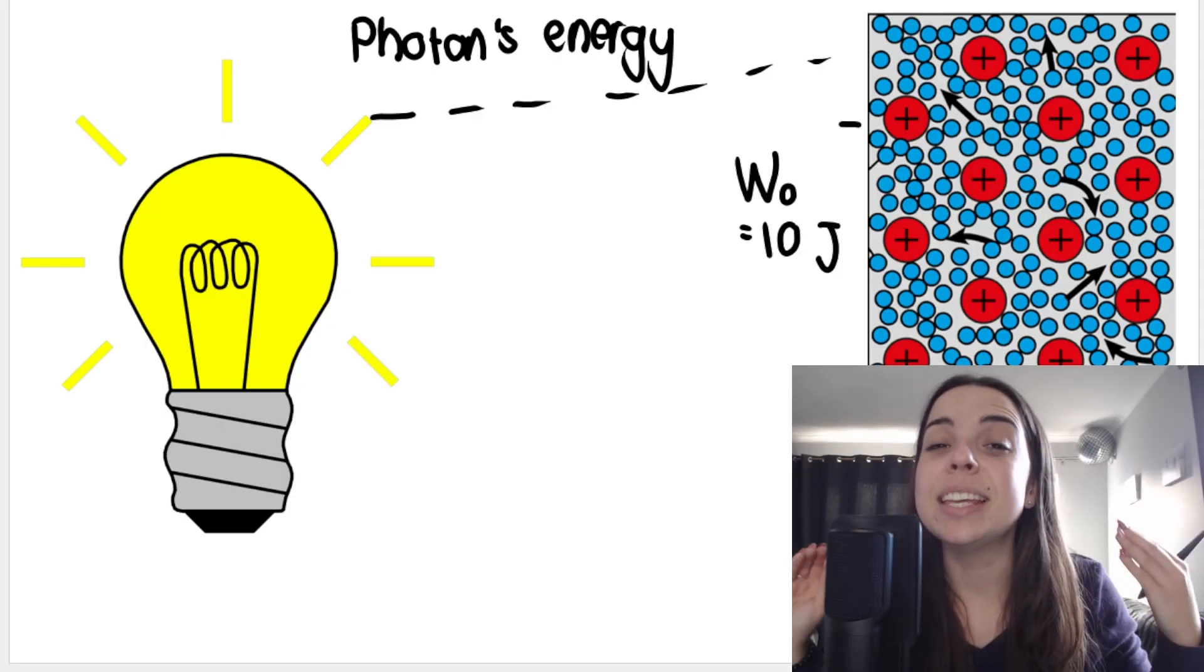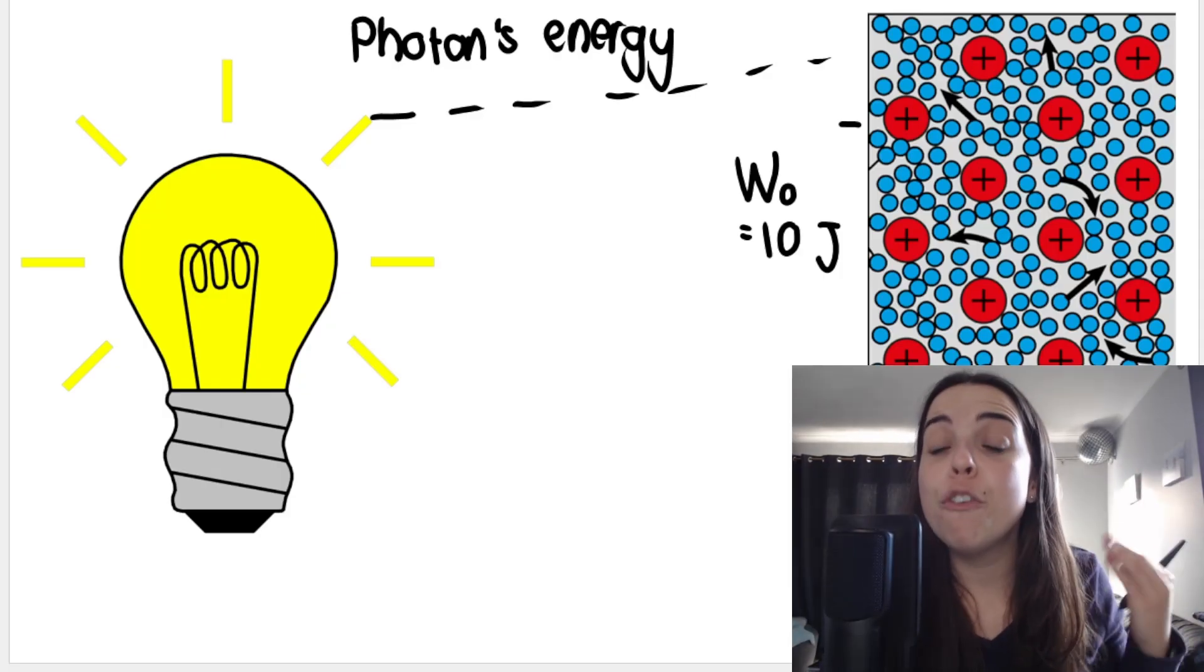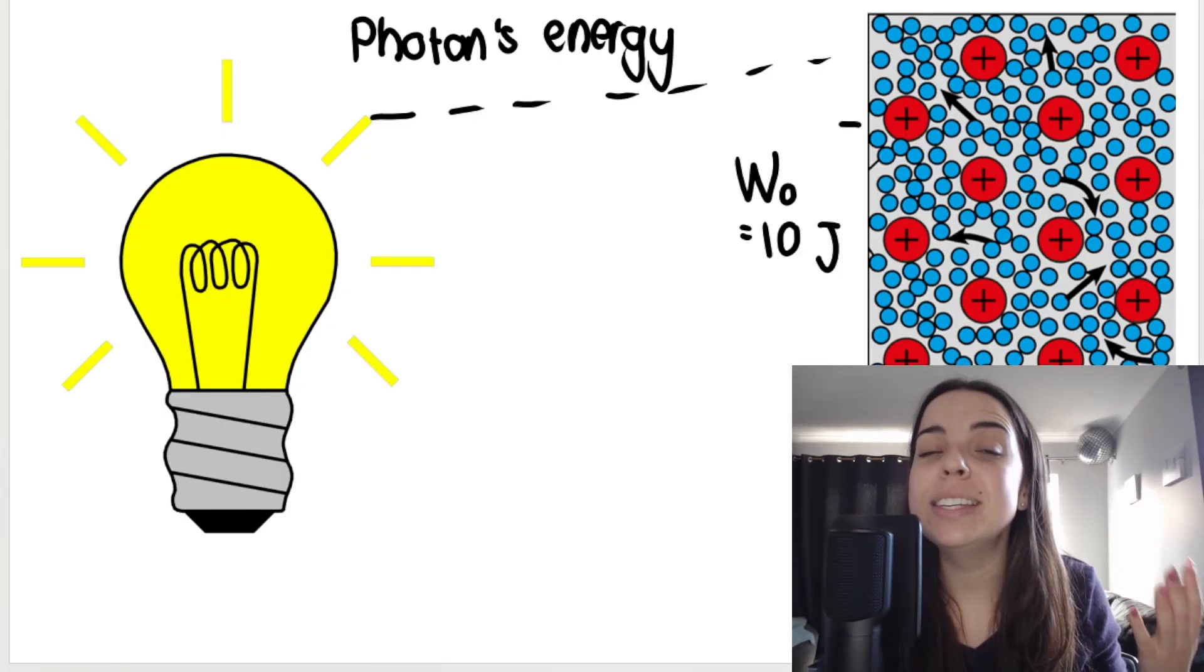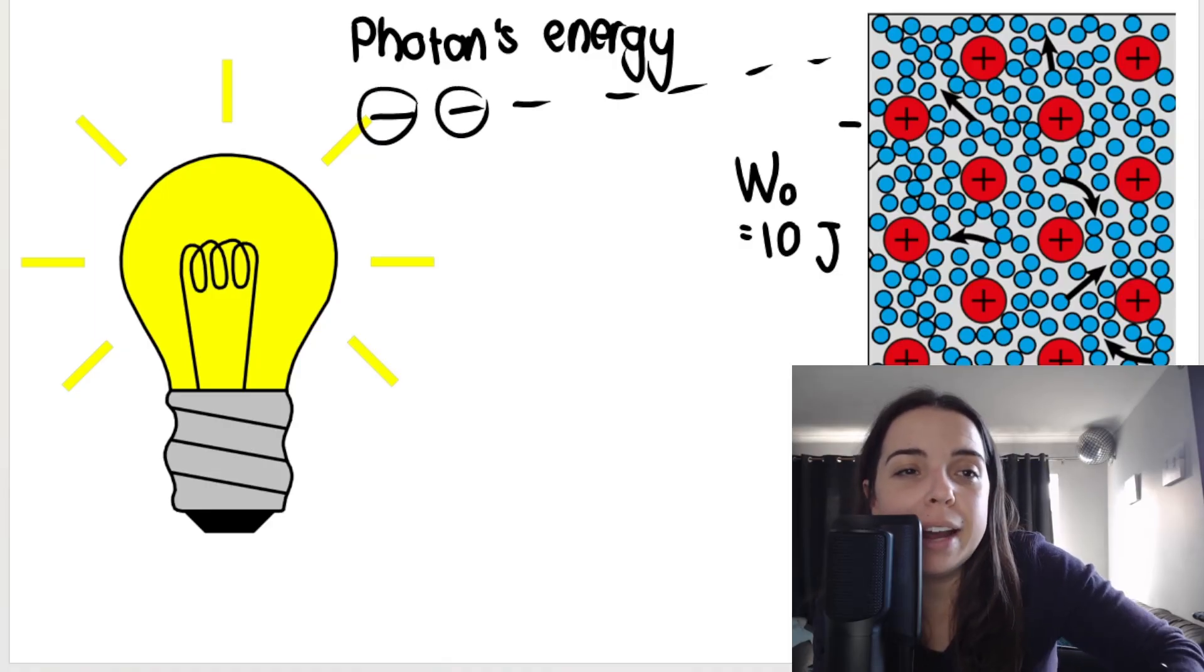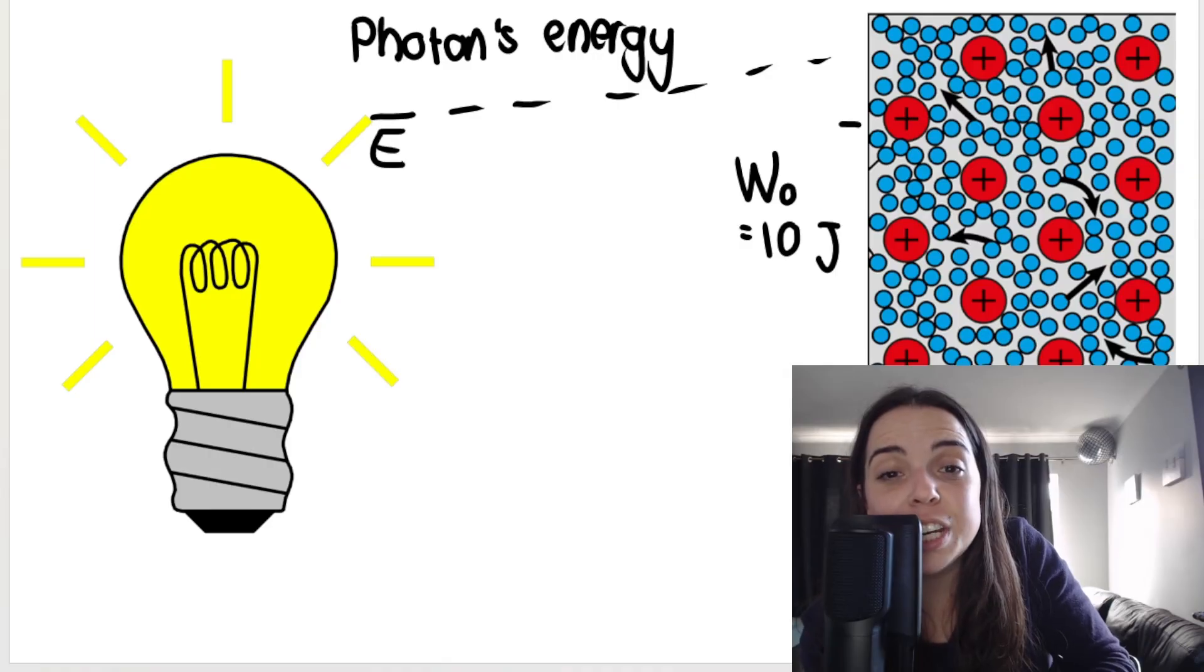In the previous lessons in this playlist we firstly spoke about photon energy, basically the energy contained in the light. So light shines on the metal and the light has photons, little packets of energy contained within the light.